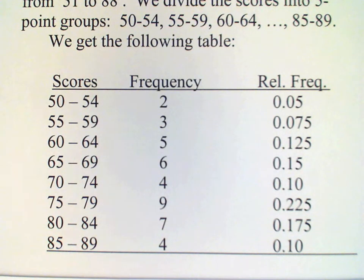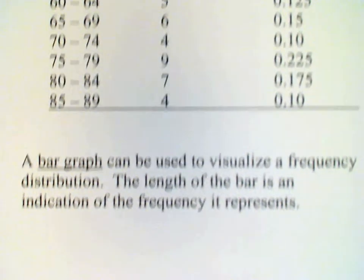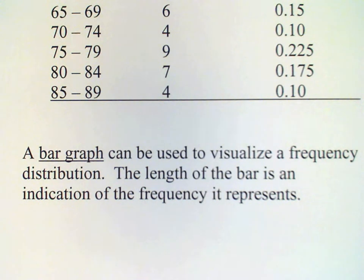So frequency distributions are one good way to summarize data. Another real good way to summarize data is using a graph. So a type of graph that's often used to summarize data is known as a bar graph, and this will allow us to visualize or take in the information in a frequency distribution at a glance. Basically, a bar graph is a representation of the frequency by using the length of a bar.